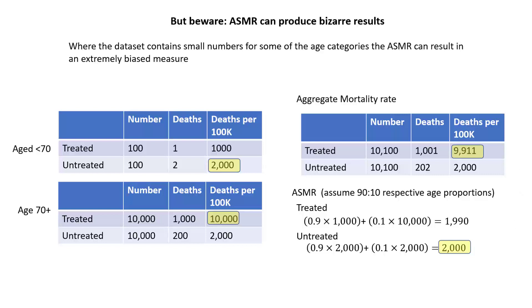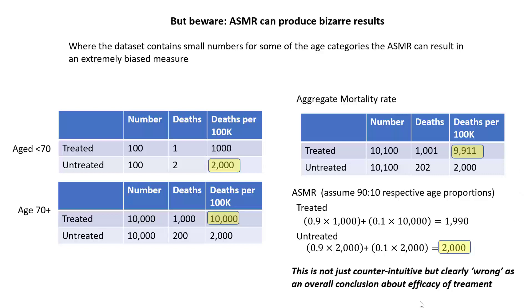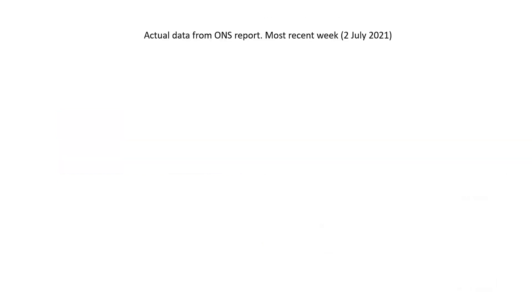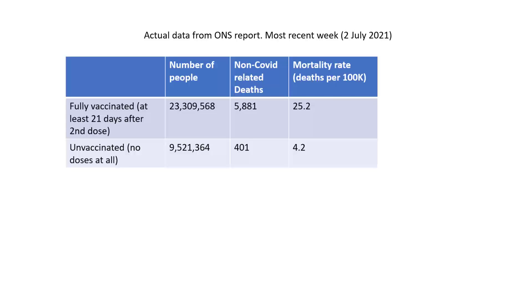So in this case the untreated mortality rate is higher than the treated — it's switched around. This is not just counterintuitive but clearly wrong as an overall conclusion about the efficacy of treatment: the treatment clearly kills more than it saves in the over-70s, while there's insufficient data to draw strong conclusions for those under 70. But that information is lost in the age-standardized mortality rate.